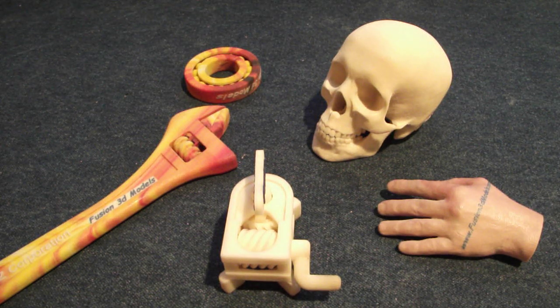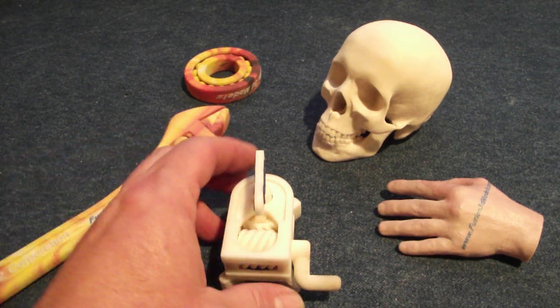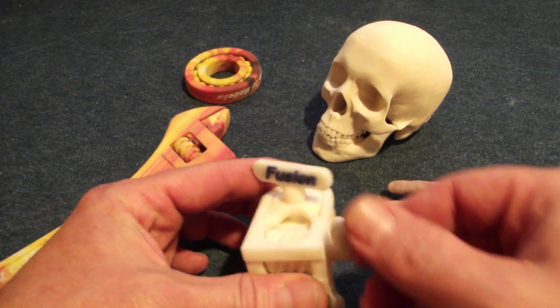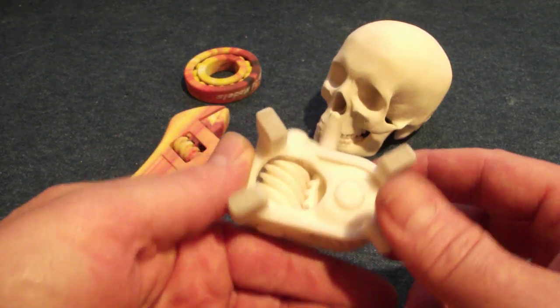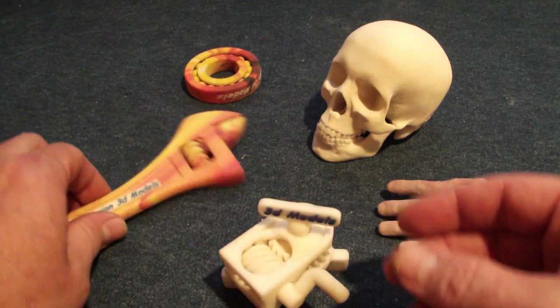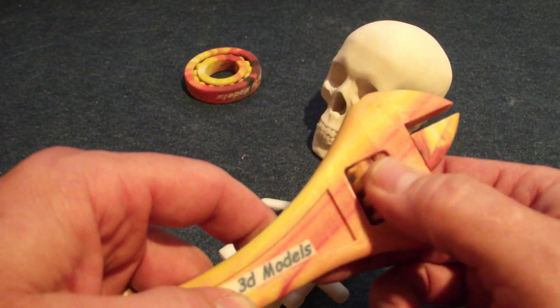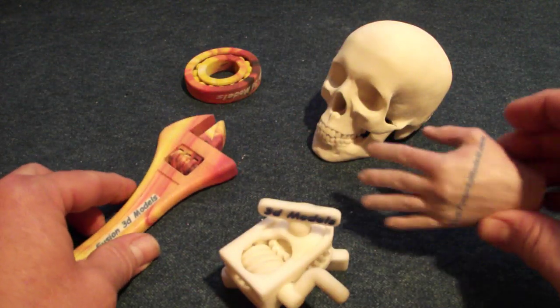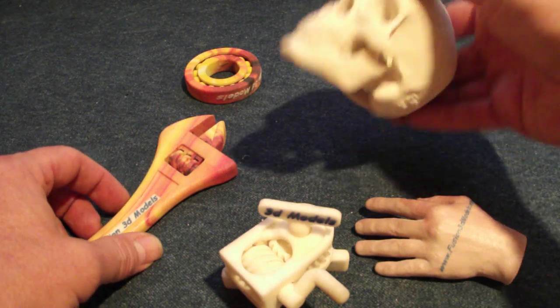Hi, this is John from Fusion 3D Models. We all know of the capabilities of 3D print, how you can make single assemblies moving like so, like the crescent wrench, hands anatomy, things like that.